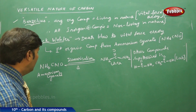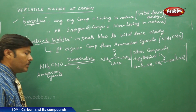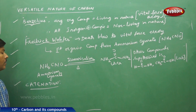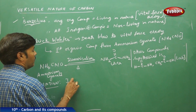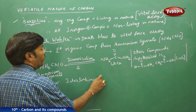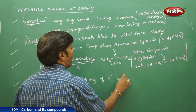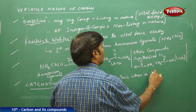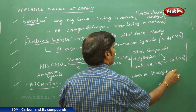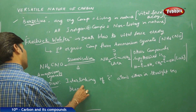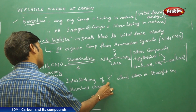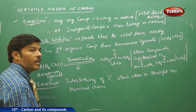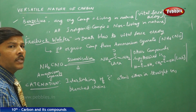We have studied the unique properties of carbon in earlier discussions. One important property carbon shows is called catenation — the interlinking of carbon atoms either in straight chains or in branched chains.